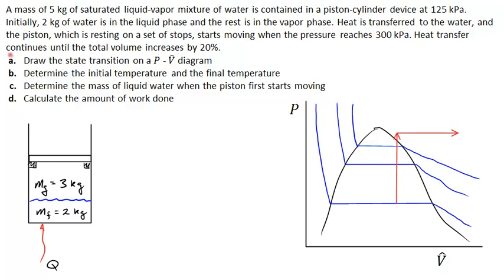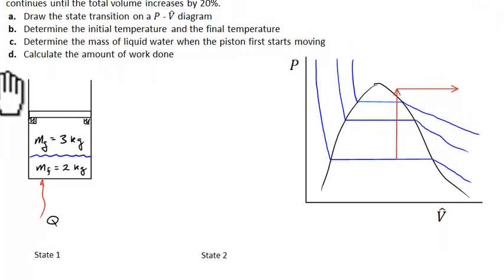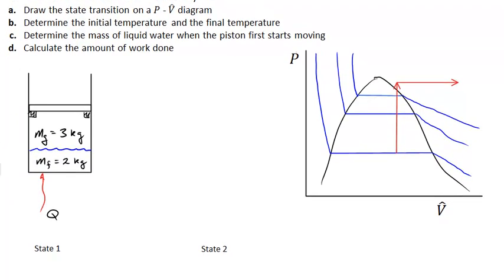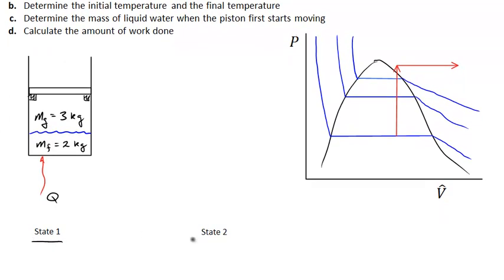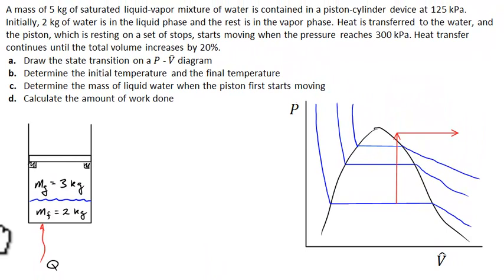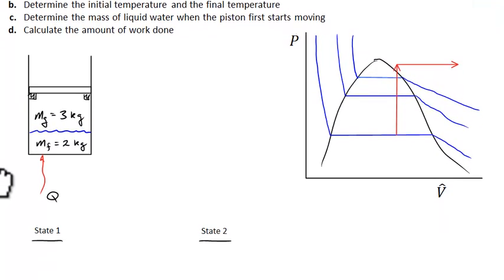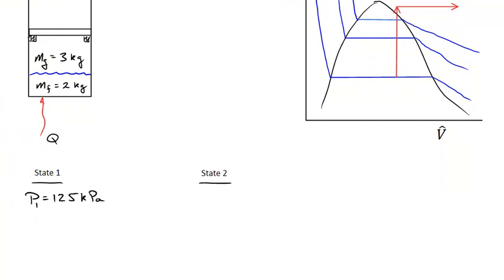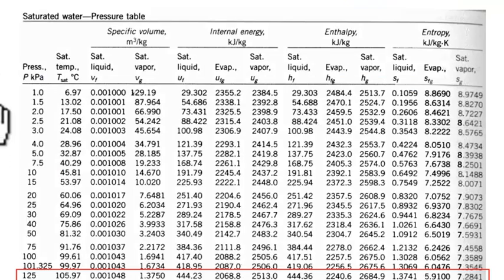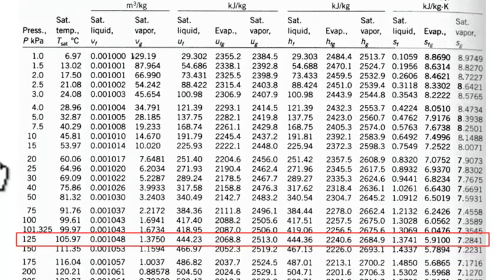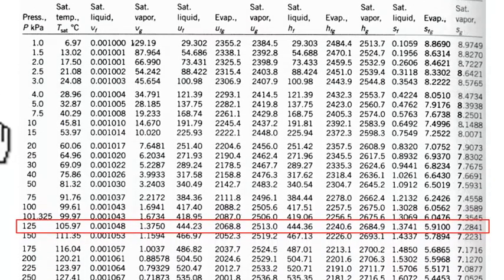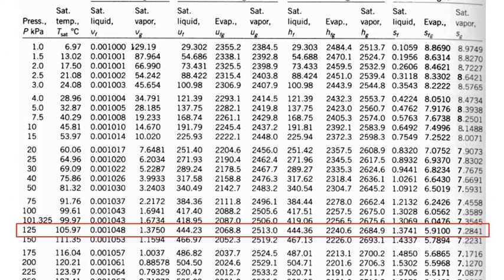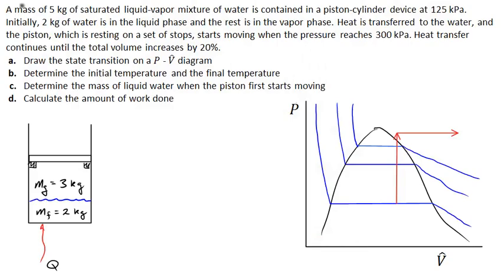To solve these problems we compile a list of all the intensive variables we know at each state. At state 1, the pressure is 125 kilopascal. Because it's a two-phase mixture in equilibrium, we can look up the initial temperature in the water pressure table. Coming down to 125 kilopascal, we find a saturation temperature of 105.97 degrees C.